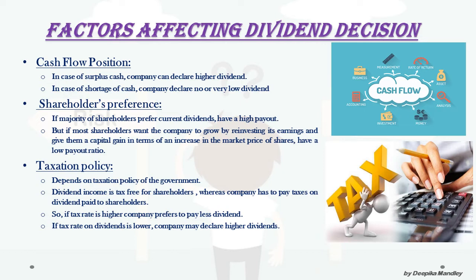We also need to keep in mind shareholders' preferences. If the majority of shareholders prefer current dividends based on current earnings, the company can have a high payout ratio. But if most shareholders want the company to grow by reinvesting its earnings and give them a capital gain in terms of an increase in the market price of shares, then the company maintains a low payout ratio and retains more earnings.